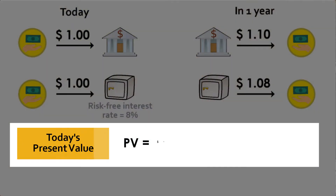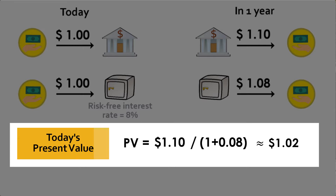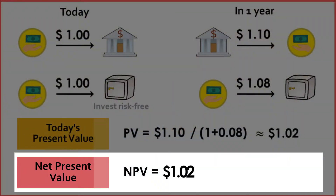To find the net present value of this offer the bank is making, we take the present value of that $1.10, which would be $1.10 divided by 1.08 because we have to factor in the risk-free interest rate. $1.10 divided by 1.08 is equal to about $1.02. So the present value of that $1.10 right now is $1.02. We subtract the present value of the cost, which is $1.00, giving us $1.02 minus $1.00 equals $0.02.